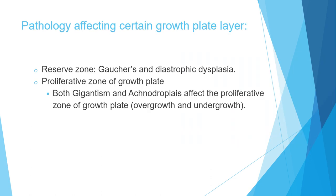Certain pathologies affect specific zones of the growth plate. The reserve zone is affected in Gaucher disease and diastrophic dysplasia. The proliferative zone is affected in both gigantism and achondroplasia — gigantism causes overgrowth, while achondroplasia causes undergrowth.